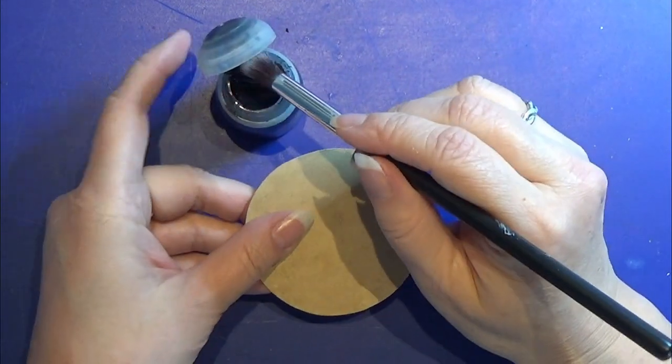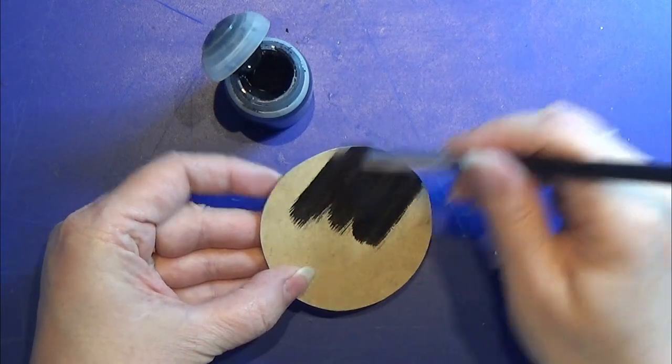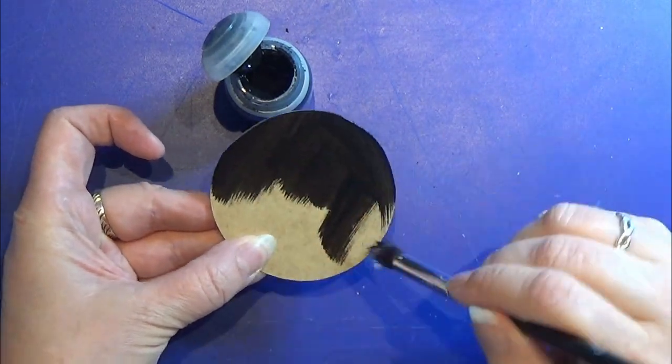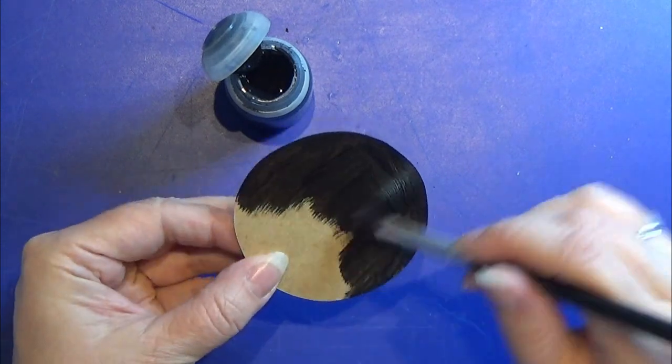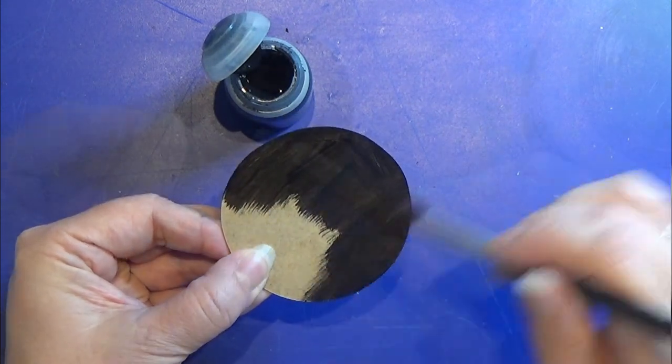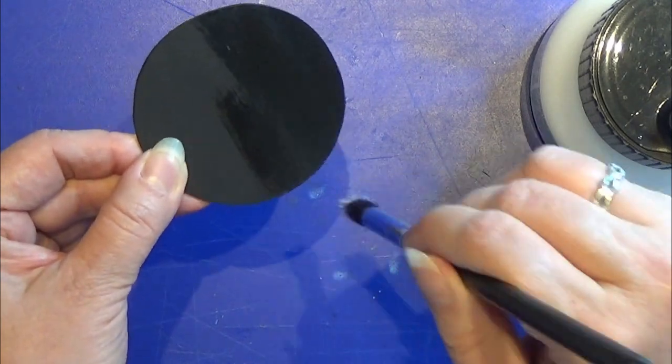After I cut it out I sanded it a bit and now I'm just going to paint it black. I'm using my citadel paint for that. I like this paint for miniatures but you can use acrylic paint instead if you have that.